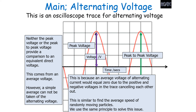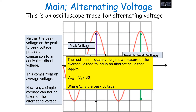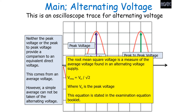We must use the root mean square voltage as the average voltage of an alternating supply. The root mean square voltage is a measure of the average voltage found in an alternating voltage supply, and is calculated using the equation: V_rms = V₀ / √2, where V₀ is the peak voltage. The root mean square voltage must be used, otherwise any average value would equal zero and not be a true measure of the energy in the circuit. This equation is stated in your examination equation booklet.